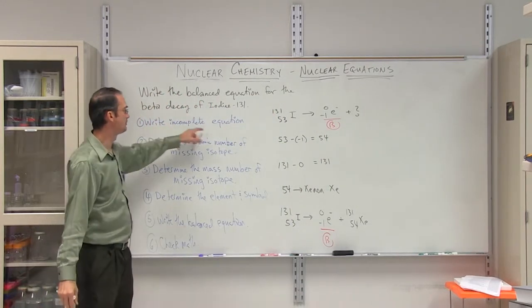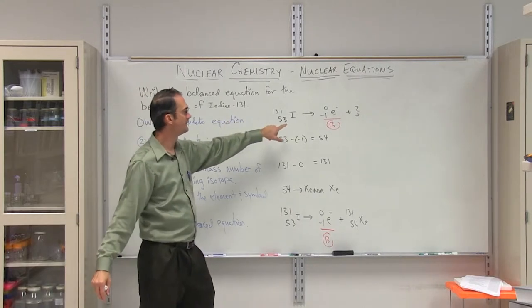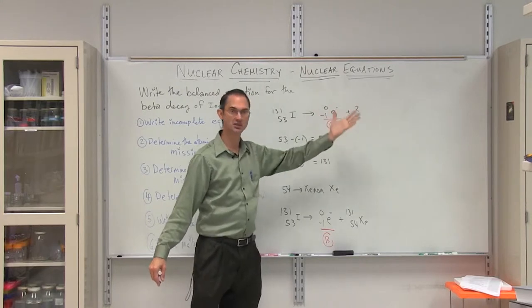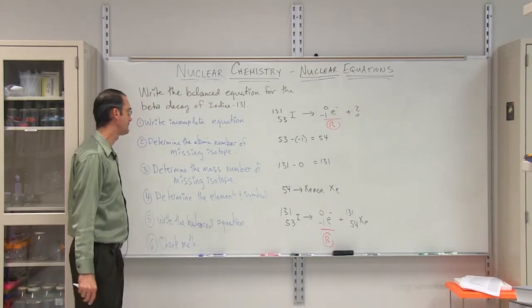So the first step is to write the incomplete equation. You start with iodine as your reactant, and as a product, you're going to have a beta particle plus something else. It's our job to find out what that something else is.